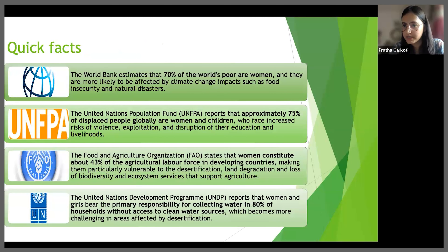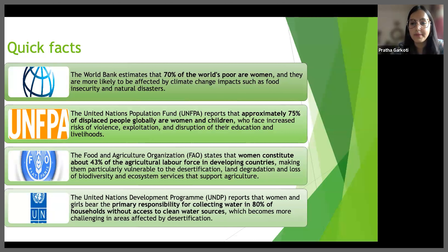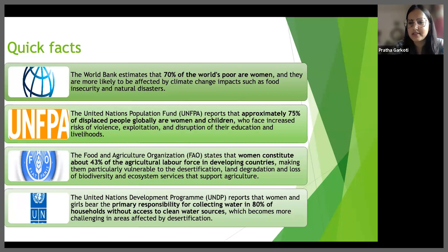We also have a list of quick facts to substantiate what we've discussed. The World Bank estimates that 70% of the world's poor are women, and they're more likely to be affected by climate change impacts such as food insecurity and natural disasters. UNFPA reports that approximately 75% of displaced people globally are women and children, who face increased risk of violence, exploitation and disruption of their education and livelihoods. The FAO states that women constitute about 43% of the agricultural labour force in developing countries, making them particularly vulnerable to desertification, land degradation and loss of biodiversity. UNDP reports that women and girls bear primary responsibility for collecting water in 80% of households without access to clean water sources, which becomes more challenging in areas affected by desertification.